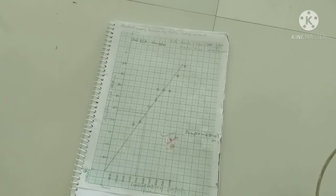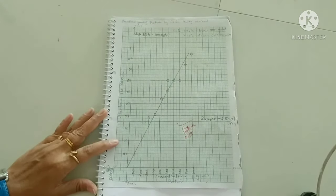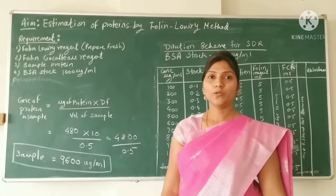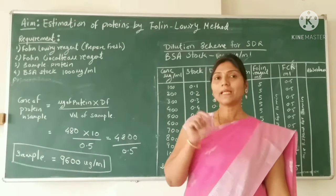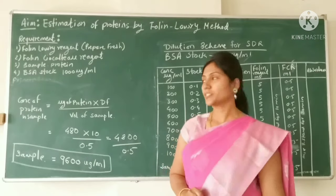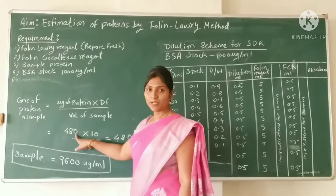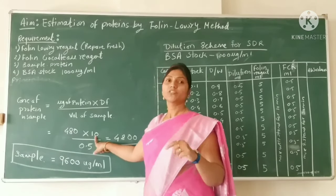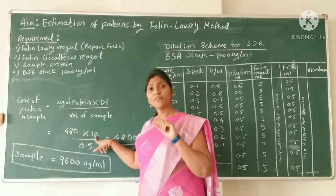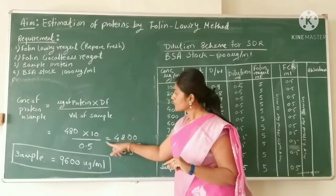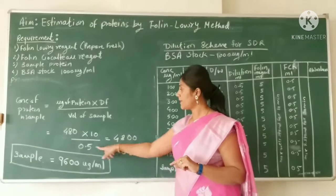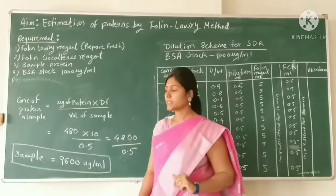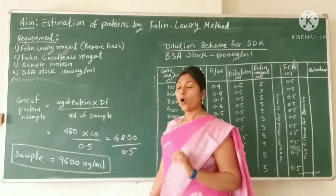However, since I diluted the sample before analysis, I need to apply a correction. The dilution factor was 10 and the volume taken for the practical was 0.5 ml. So the actual concentration is: 480 × 10 ÷ 0.5 = 9600 micrograms per ml. Therefore, the original sample contains 9600 micrograms of protein per ml.